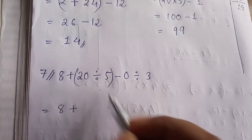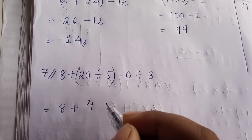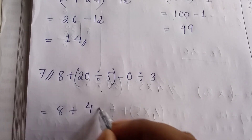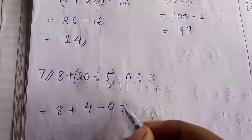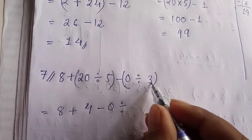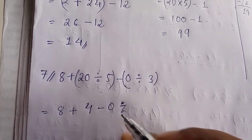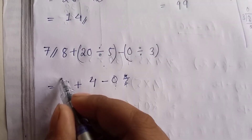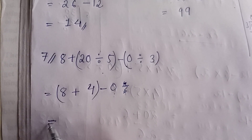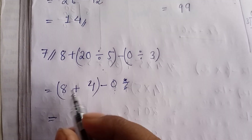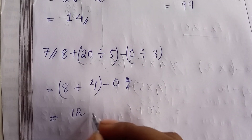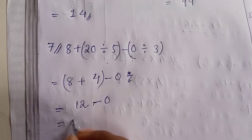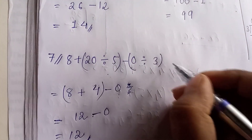Question number 7: first divide. 4 times 5 is 20, so the answer is 4. There is also 0 divided by 3 which equals 0, because if you divide 0 by any number the answer is 0. Then addition: 12 minus 0. The answer is 0.